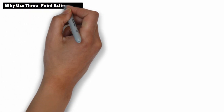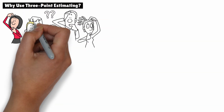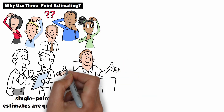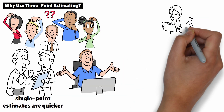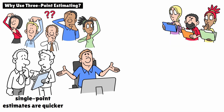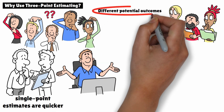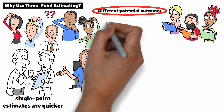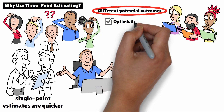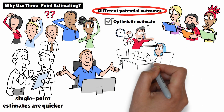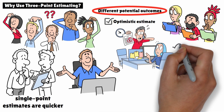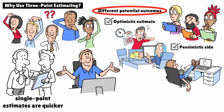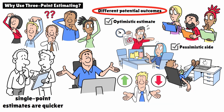You might be thinking: why bother with three estimates when I can just pick one? While single-point estimates are quicker, they don't account for the unpredictability of real-world projects. Three-point estimating ensures you consider different potential outcomes, reducing the risk of under- or over-estimating your project's needs. For instance, relying solely on an optimistic estimate could lead to a too-tight schedule or budget, while focusing only on the pessimistic side may lead to unnecessary buffers that impact efficiency. Three-point estimating helps you strike a balance.